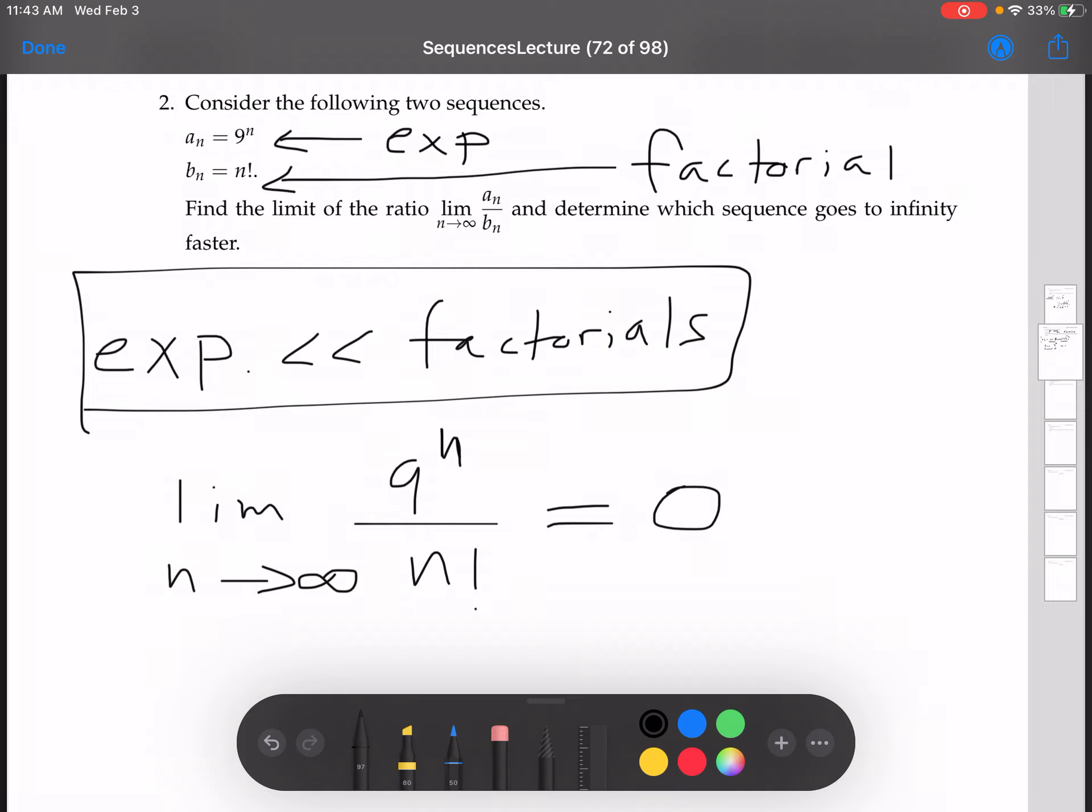All right, the dominant term is in the denominator. So even though 9 to the n is pretty big for large n, it's just not big enough. And so we're dividing by more in the denominator every time, and so we approach 0.